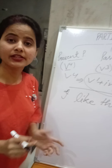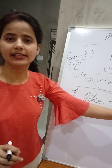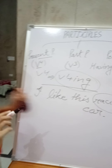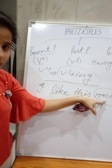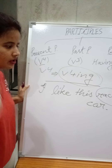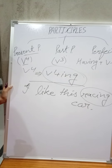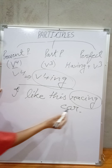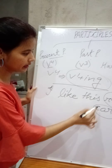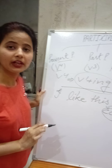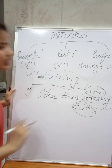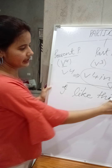Look at the word — which word consists of ING here? Definitely 'racing.' So racing consists of ING. Now check whether it functions as an adjective or not. Adjectives are words which tell us more about a noun or pronoun. So here, racing is describing 'car.' What kind of car? A racing car. So this V4 is used here as an adjective.